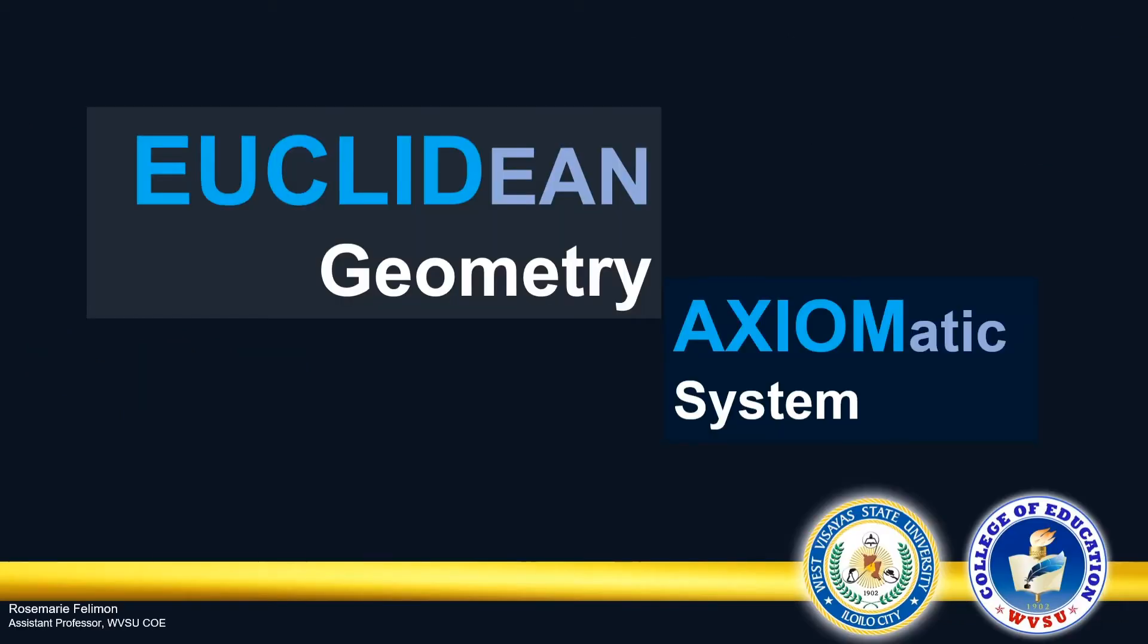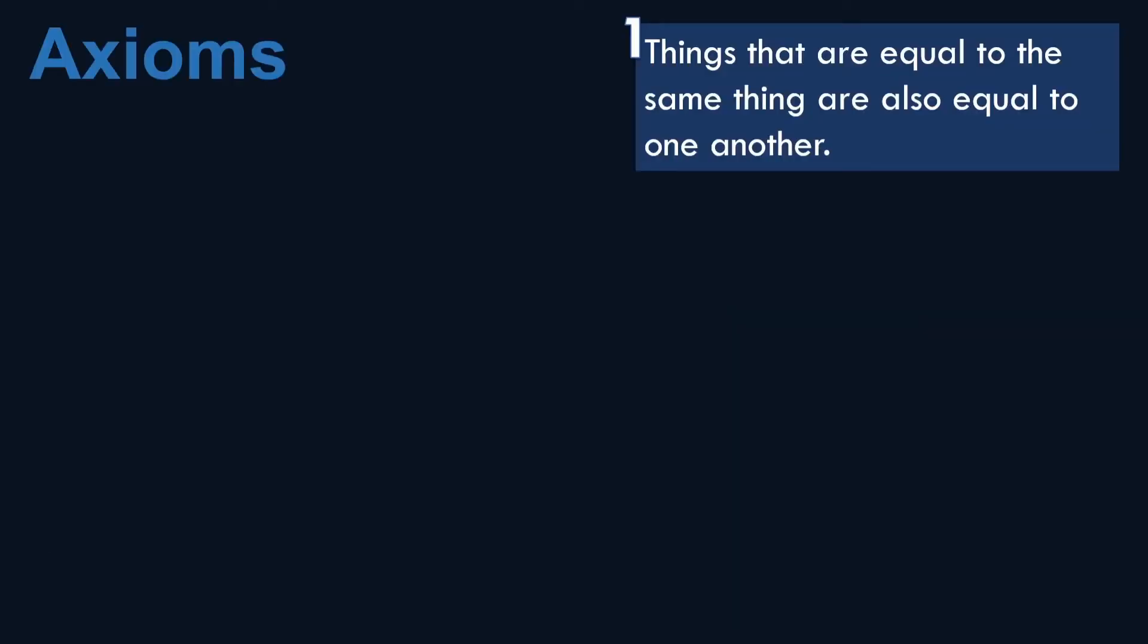What are the five axioms of Euclid? The first one states that things that are equal to the same thing are also equal to one another.